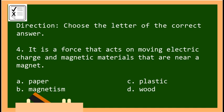For number four: it is a force that acts on moving electric charges and magnetic materials that are near a magnet. A, paper; B, magnetism; C, plastic; or D, wood. The correct answer is letter B, magnetism. Great job, kids!